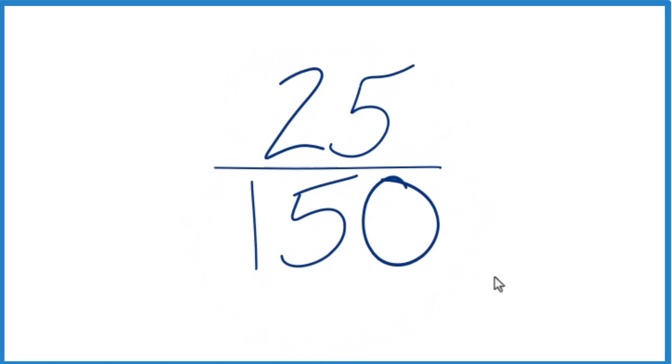To do that, we need to find a common factor, something that goes into 25 and 150 evenly. We want to find a whole number, which we call the greatest common factor.